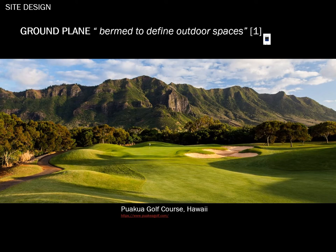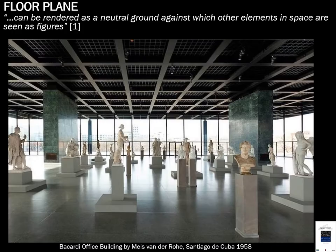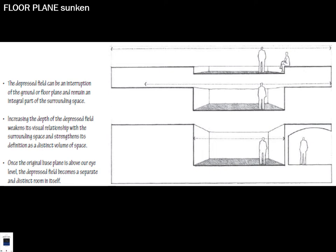This image is from Hawaii, where I've been a number of times — Maui, Kauai, and Oahu several times. A floor plane can be rendered as a natural or neutral ground against which other elements in space are seen as figures — serving as a backdrop to accentuate sculptures in this case. The floor plane can also be sunken down, creating a different effect: whether isolating if deeply sunken, or if shallow enough, you can sit on the edge of it.